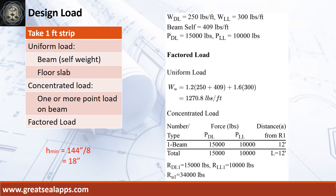The beam carries a uniform dead load of 250 pounds per foot and uniform live load of 300 pounds per foot. The beam's self-weight is 409 pounds per foot, for a factored uniform load of 1,270.8 pounds per foot. The beam also carries a concentrated dead load of 15,000 pounds and concentrated live load of 10,000 pounds at the edge of the beam, for a factored concentrated load of 34,000 pounds.